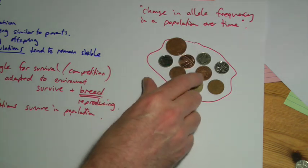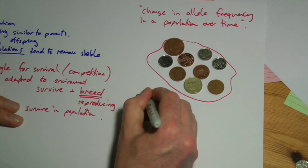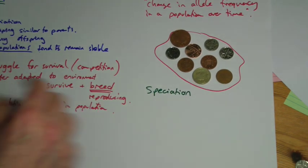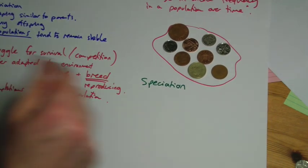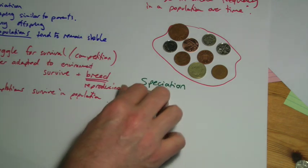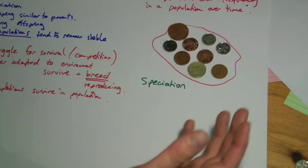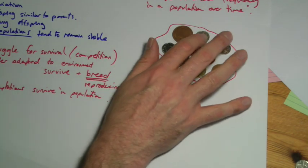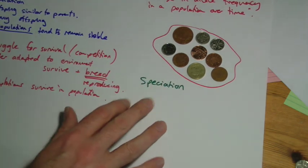Now the issue comes when people then start to talk about speciation. Because speciation, you know, what Charles Darwin, obviously his book was called On the Origin of Species, and what he was trying to say is how we've got different species occurring. And this is where people start to say, well hang on, you know, how do we, does it mean that dogs can turn into cats and monkeys can turn into humans? And it doesn't mean that at all.